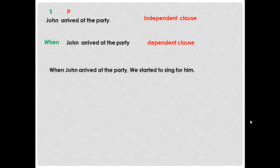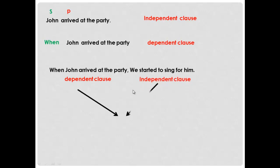So once you add a subordinate conjunction to an independent clause, it becomes a dependent clause. 'When John arrived at the party, we started to sing for him.' Now I have a complete meaning and a complete idea. Together, a dependent clause and an independent clause make a complex sentence.